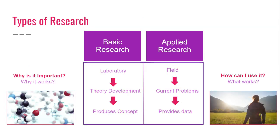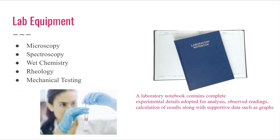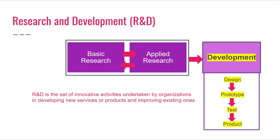We're going to talk about two types of research: basic research and applied research. Basic research involves laboratory research, development of a theory, and produces concepts. Applied research is field research — it addresses current problems and provides data. Basic research asks 'why is it important and why does it work,' while applied research asks 'how can I use it and what works.' Types of lab equipment include microscopy, spectroscopy, wet chemistry, rheology, and mechanical testing. One important but overlooked piece of 'equipment' is your laboratory notebook, where you record all observations, calculations, and data.